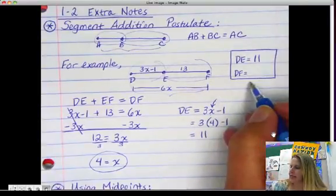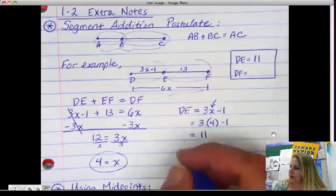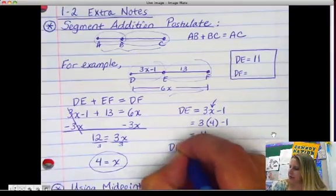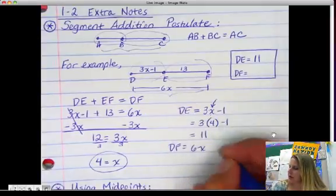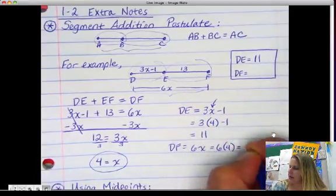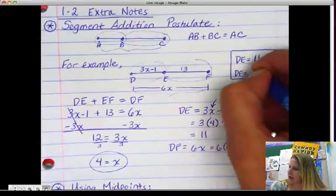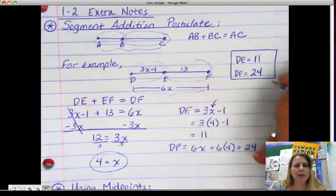Now we need to find out what DF is. So DF is 6x, 6 times 4. So that's 6 times 4 is 24. Now, always double check your work.